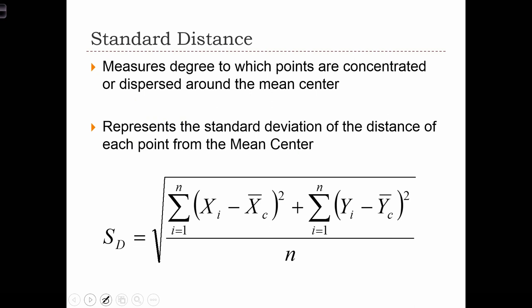While range is quite easy to calculate, by and large people like to talk about the dispersion of point distributions using something called the standard distance, which measures the degree to which points are concentrated or dispersed around the mean center. This represents the standard deviation of the distance of each point from the mean center.